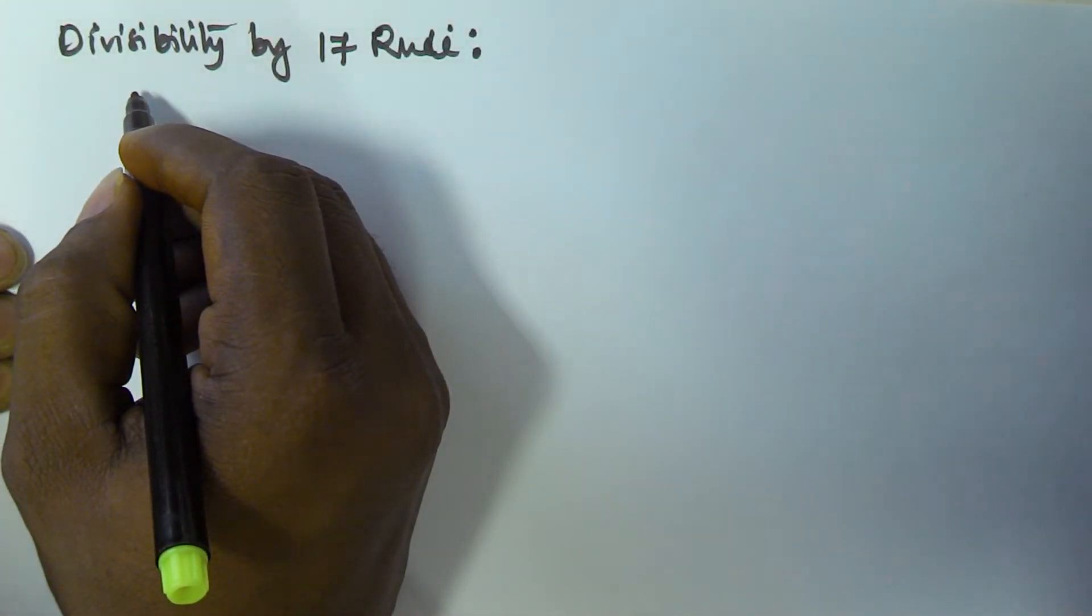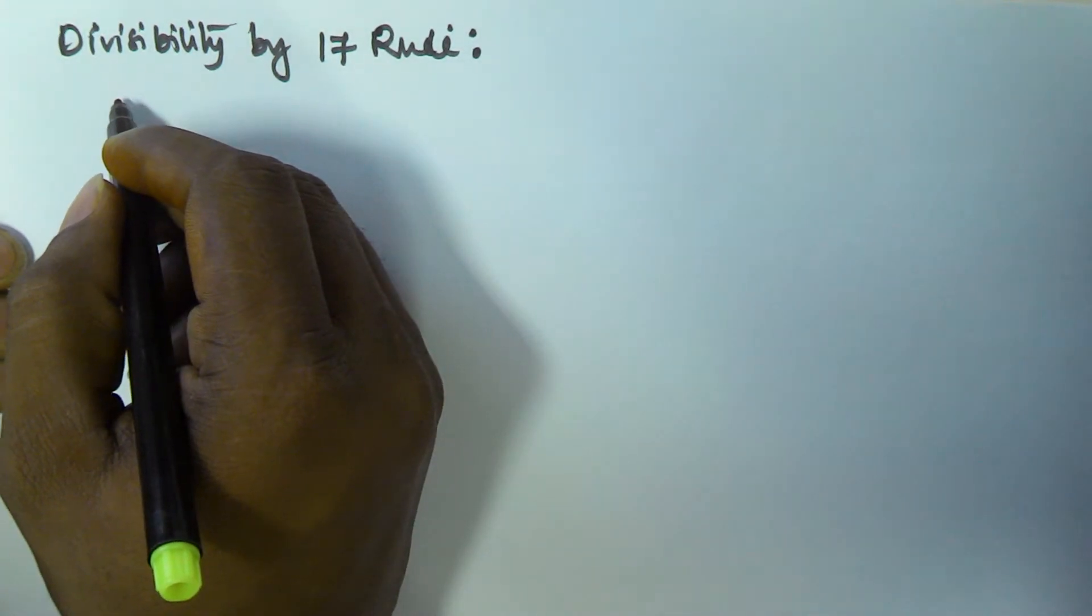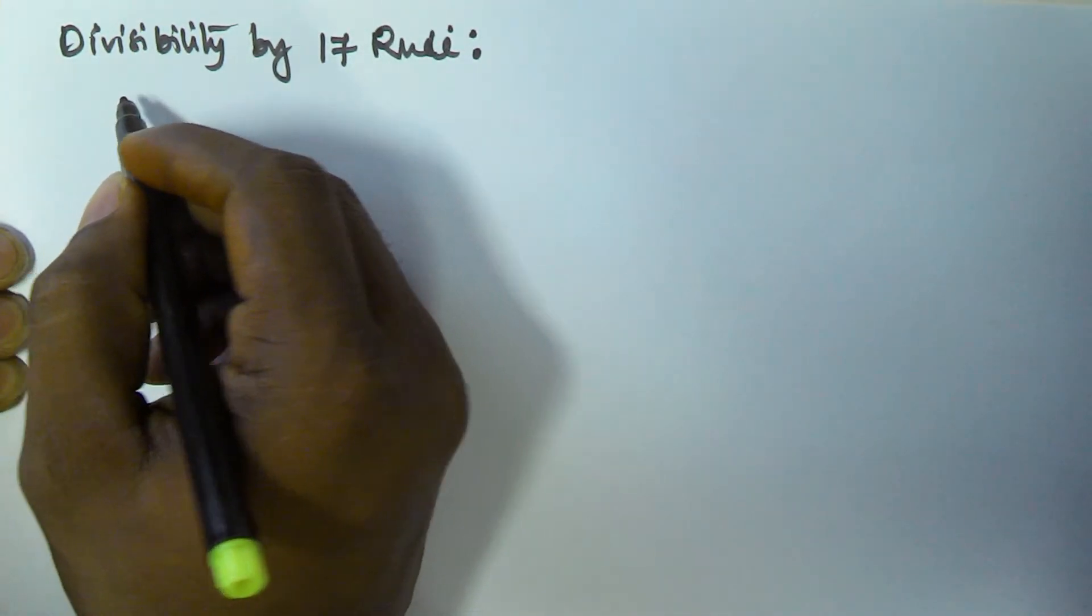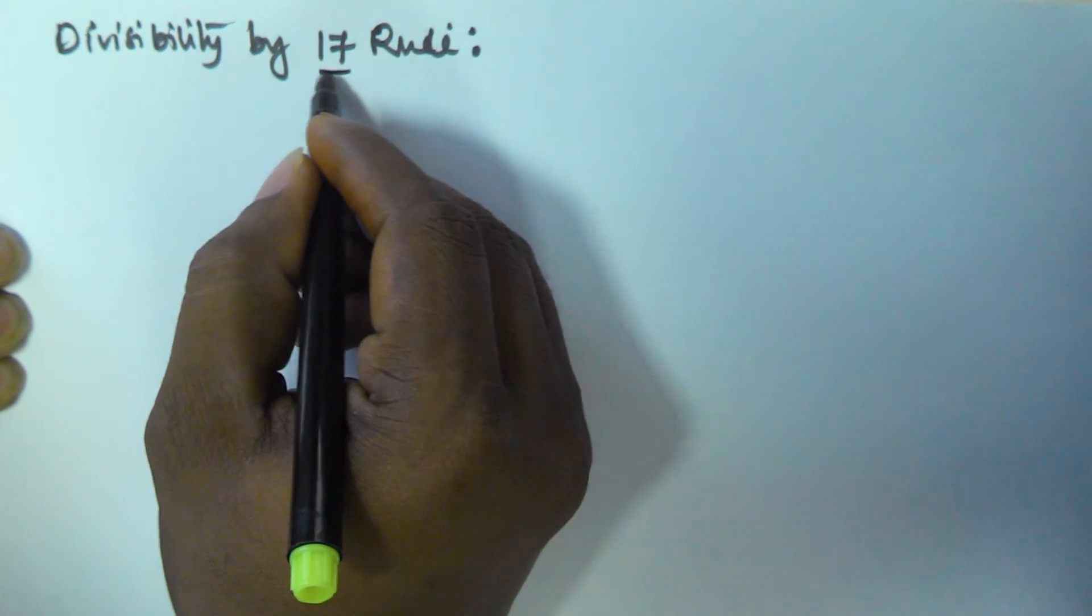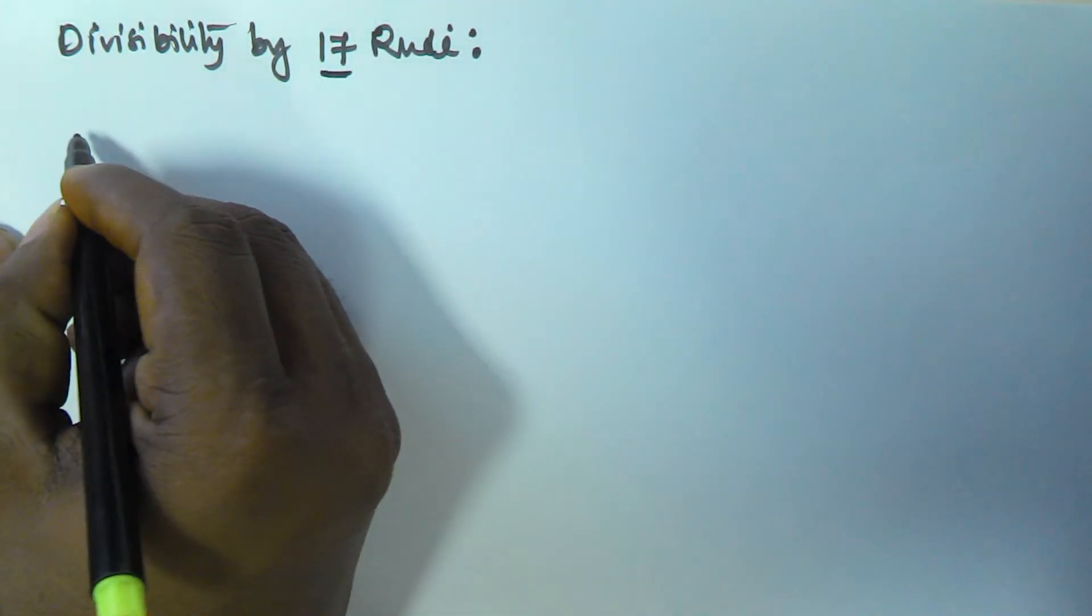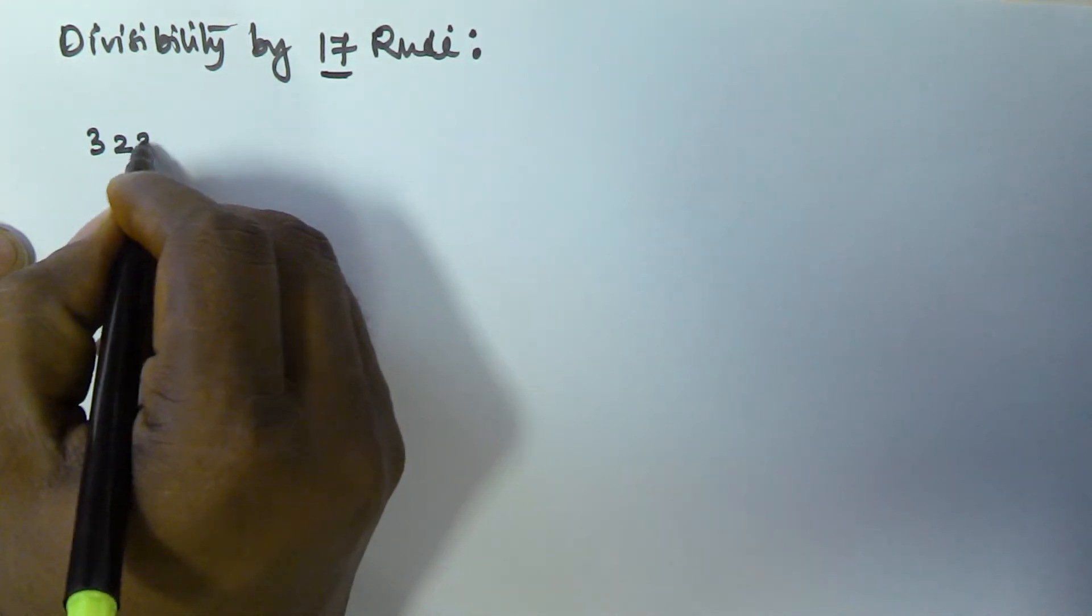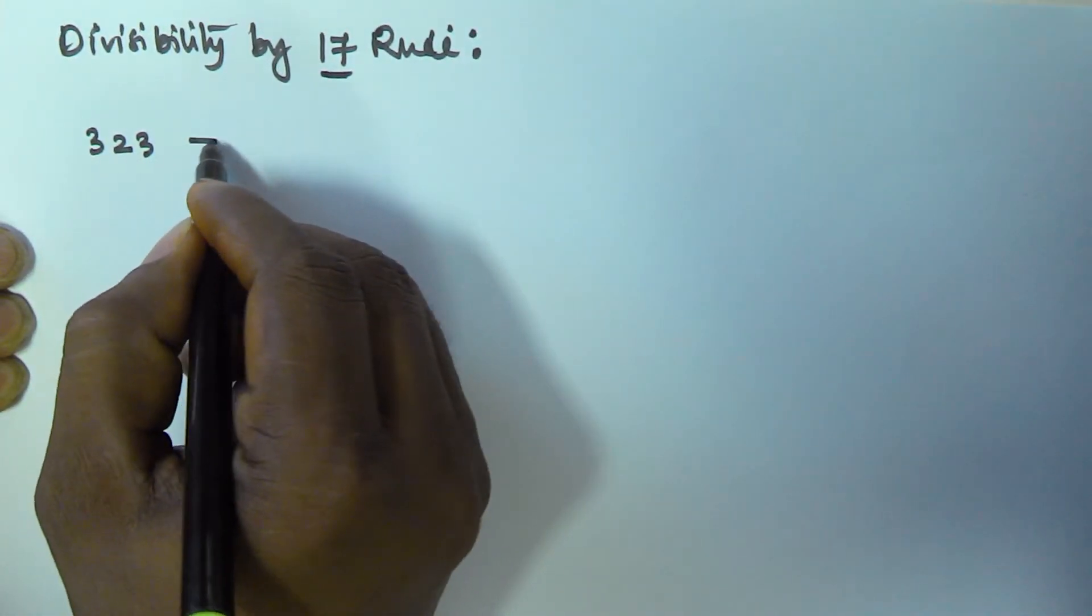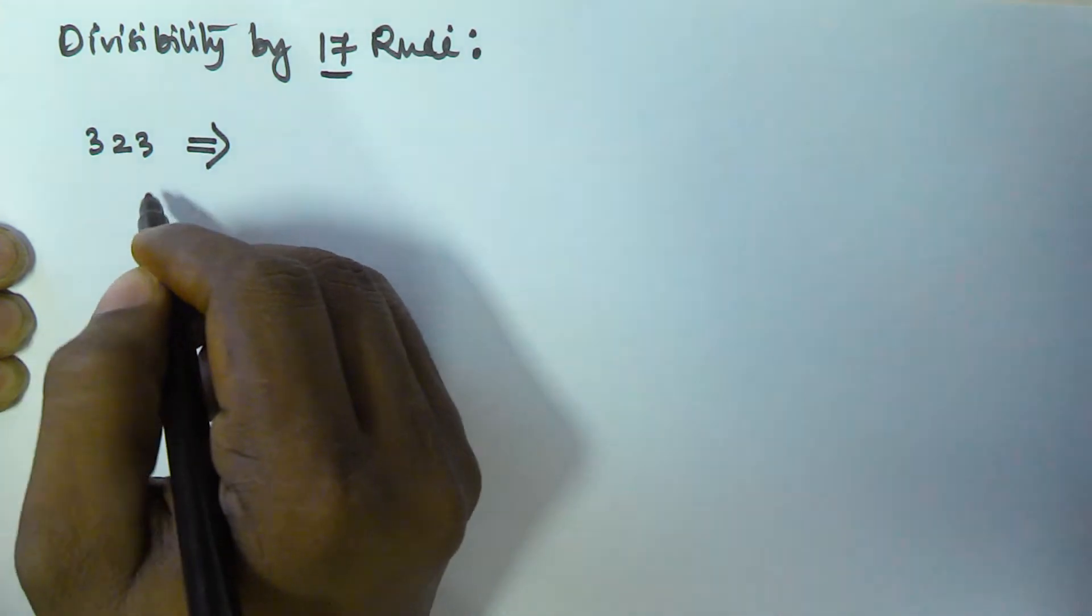Hello friends, in this video I will show you how to check if a given number is divisible by 17 or not. Let us take a number, that is 323, to check if this number is divisible by 17 or not.